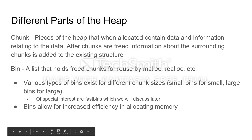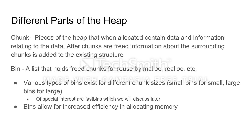There are two different parts of the heap: chunks and bins. Chunks are pieces of the heap that, when allocated, contain data and information relating to that data. After chunks are freed, information about the surrounding chunks is added to the existing structure. Bins are lists that hold freed chunks for reuse by malloc, realloc, and other allocation algorithms.